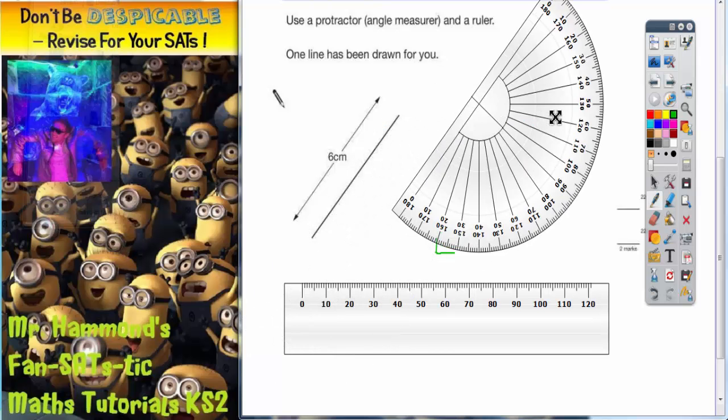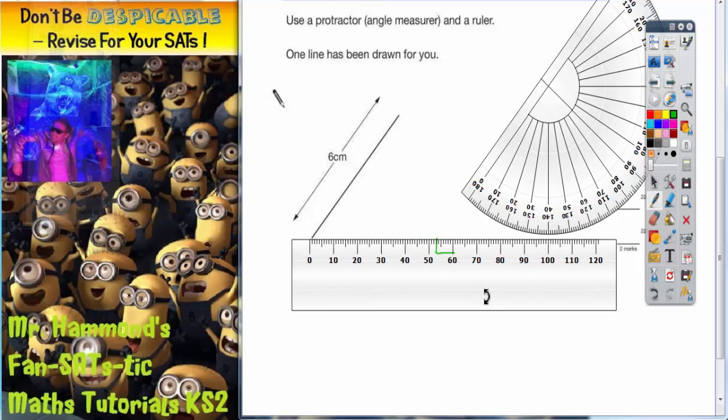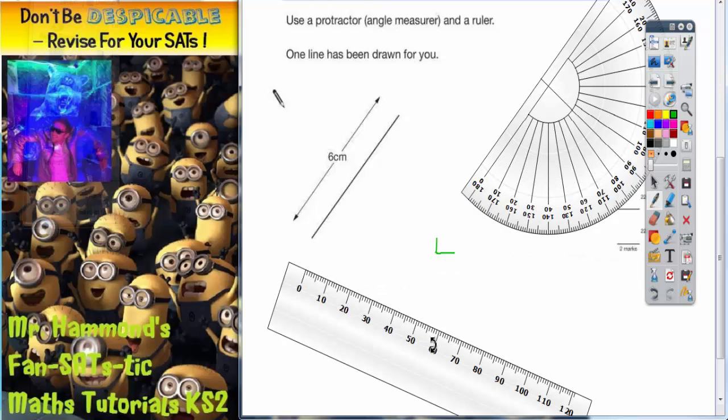So what you've got to do then is move your angle measure out of the way, get your ruler on there like that, and join it to make your 55.